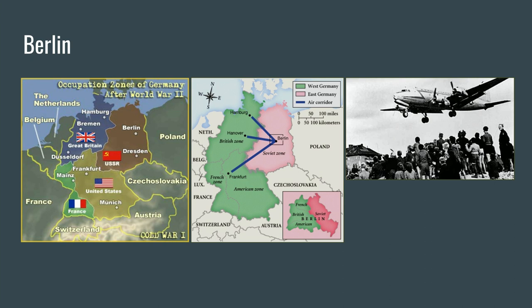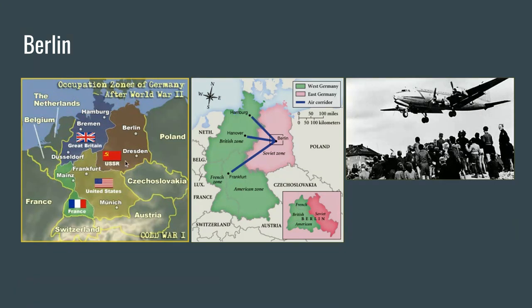After World War II, Berlin is going to be divided into four zones. You're going to have a British section, a French section, a U.S. section, and a Soviet Union section. So Berlin is going to be divided, as well as the entire country of Germany. Make sure you know that it was divided into these different zones. Eventually, the western portion of Germany is going to become West Germany, and the eastern portion is going to become East Germany. East Germany is going to become communist, while West Germany is going to become free and democratic.